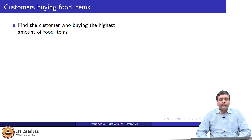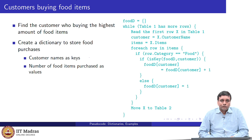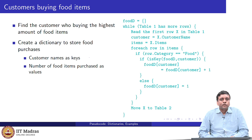Suppose we wanted to find a customer who buys the highest number of food items — we are just counting the highest number of food items. One way to do this is to create a dictionary. In this dictionary, we will store the quantity of food items purchased by each customer. We want to accumulate, against each customer's name, how many food items that person has bought. So the keys will be the customer names, and the values will be the number of food items across all the bills of that customer.